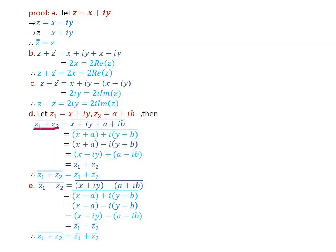The conjugate of z1 plus z2 becomes the conjugate of x plus iy plus a plus ib, which equals the conjugate of x plus a plus i times y plus b, which equals x plus a minus i times y plus b. This equals x minus iy plus a minus ib, which equals the conjugate of z1 plus the conjugate of z2. Therefore, the conjugate of z1 plus z2 equals the conjugate of z1 plus the conjugate of z2.